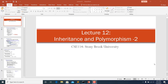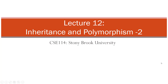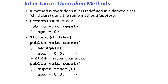Welcome to this lecture, which is part two of inheritance and polymorphism. In part one we learned about inheritance in object-oriented programming, wrote some programs, and tried to understand in which cases we can use inheritance and how to implement it. We also learned about a few concepts like method overriding and hiding. Let's continue the discussion and look at more examples.